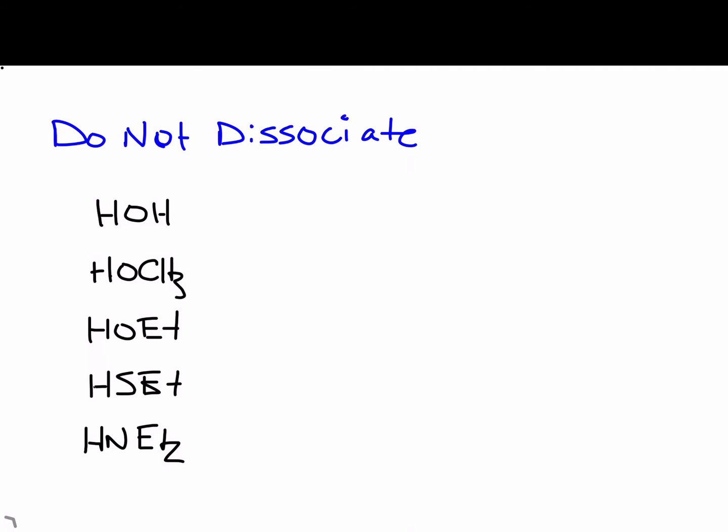So a common practice is for students to break these up into ions. And you cannot do that. So I frequently see water written as a source of protons and hydroxide ions. You cannot do that with water. Water doesn't dissociate to any appreciable extent to be able to be used like that. Same thing with these alcohols, like ethanol. You can't write this as H plus OET minus. And of course, you certainly can't do something like HO minus ET plus. That's totally wrong.